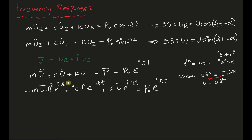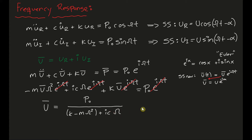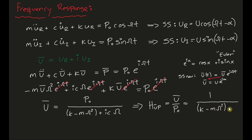We write down the equation of motion, and we see that all the exponential terms cancel out. Then we take U_bar and move everything else to the right-hand side, giving us: K minus M*omega² plus i*C*omega. Now, taking P_naught and dividing by U_bar, I get my complex frequency response function H_up, which equals U_bar divided by P_naught. So H_up equals 1 over (K minus M*omega² plus i*C*omega). This is my frequency response function, and we're going to use this function throughout this course — it has a lot of useful information embedded in it.